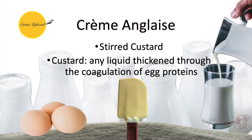Creme anglaise falls under the category of stirred custard, meaning it's cooked on the stove, whereas a baked custard is finished in the oven. Custard can be defined as a liquid that is thickened by the coagulation of egg proteins. This liquid is often a dairy product as we will see today, but does not necessarily have to be.